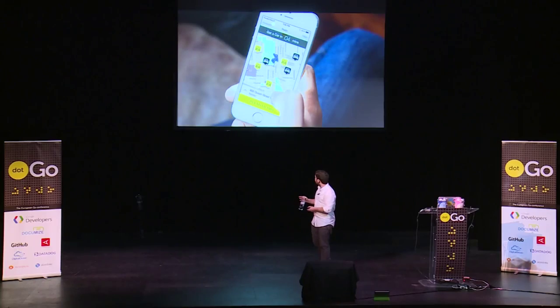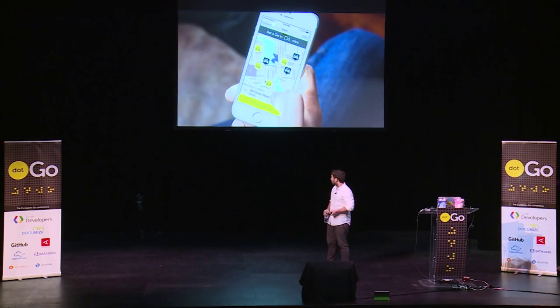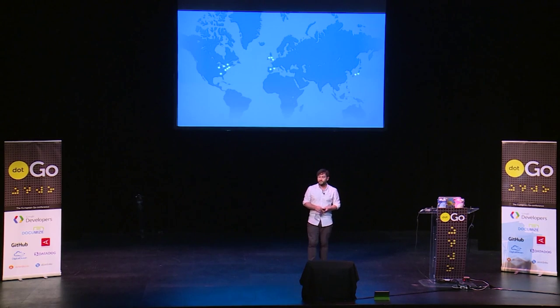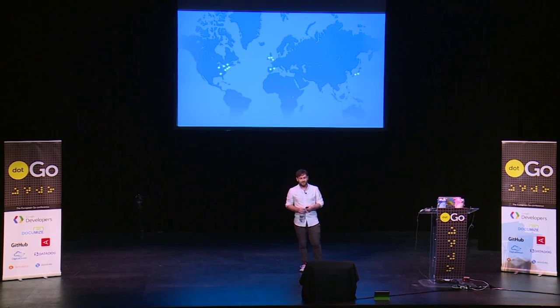Hi everybody. So I work at Halo. For anyone who doesn't know that, we're like a taxi app — you can get taxis or licensed cars through our app. We're live in a number of cities across the world, which means we run our infrastructure on three continents, which causes a number of issues.